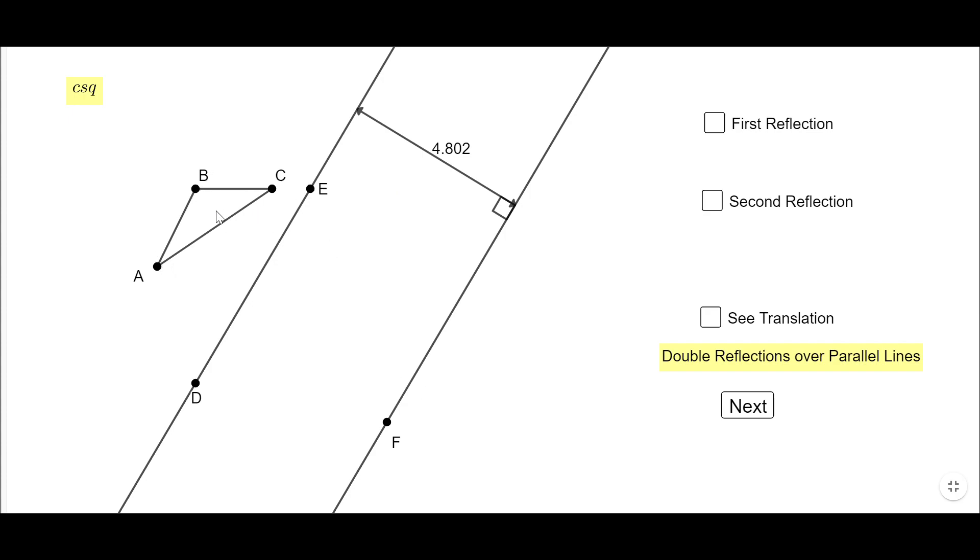And the first thing I'm going to do, I'm going to reflect this triangle over the line D-E. There you go. This is the image of reflecting A-B-C over the line D-E, the triangle A-B-C-prime.